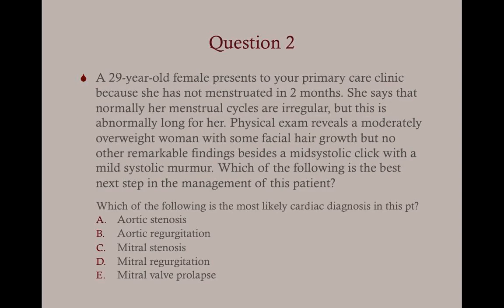Question two: A 29-year-old female presents to your primary care clinic because she has not menstruated in two months. Normally her menstrual cycles are irregular, but this is abnormally long for her. Physical exam reveals a moderately overweight woman with facial hair growth, and a mid-systolic click with a mild systolic murmur. Which of the following is the most likely cardiac diagnosis? The answer is E, mitral valve prolapse.